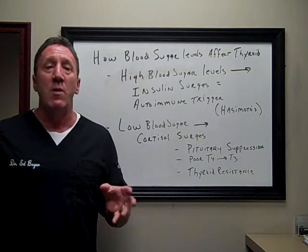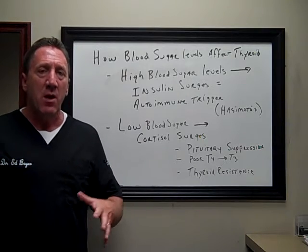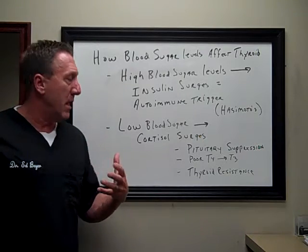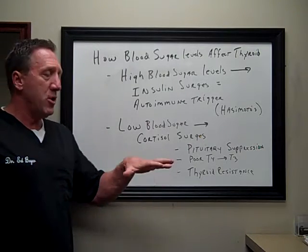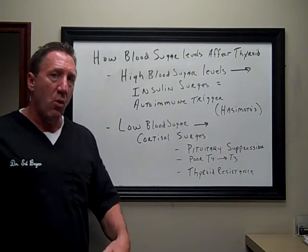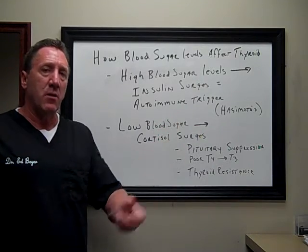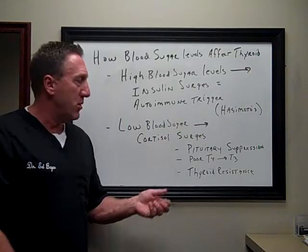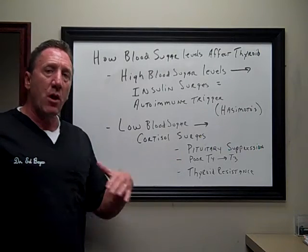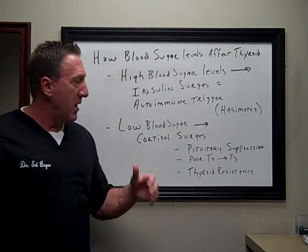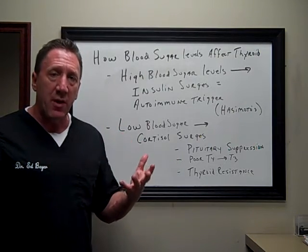Let's talk about low blood sugar, or what we would call reactive hypoglycemia, which is usually a problem in the adrenal glands. When your blood sugar goes too low, the hormone cortisol is going to be emitted in surges from the adrenal glands. And when cortisol is elevated, it's going to have some negative effects on your thyroid.